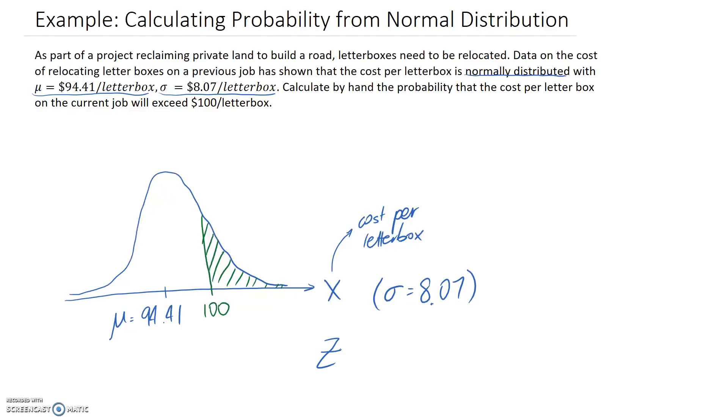We have an equation to go between x and z. The z value equals z = (x - μ) / σ. In our case, the x value that we're interested in is 100, the mean of x is 94.41, and the standard deviation of x is 8.07.